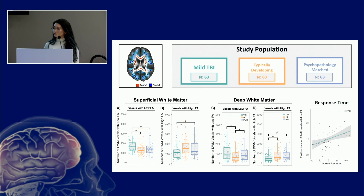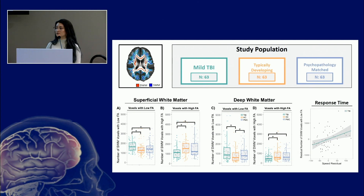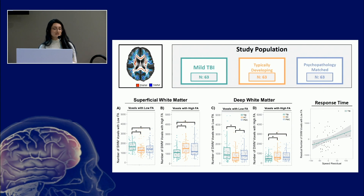The reason we did this is because we have reasons to suspect that they may be differentially vulnerable due to their rates of development — and we're looking at a youth population — and also because of the fact that they pass through changes in tissue density. Essentially what we did is group comparisons as well as comparisons with attention.